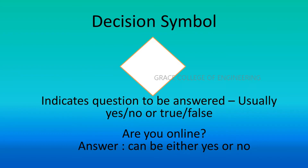The decision symbol is a diamond shape. This indicates a question to be answered, usually yes or no, or true or false. For example, 'Are you online?' — the answer can be either yes or no.